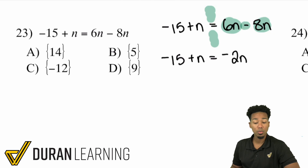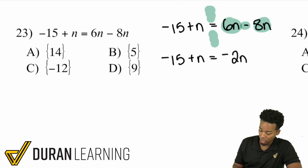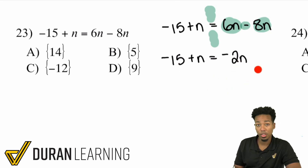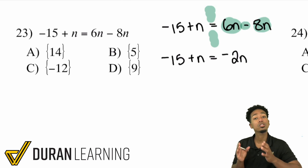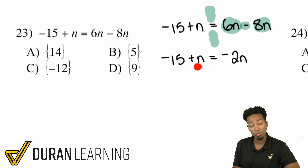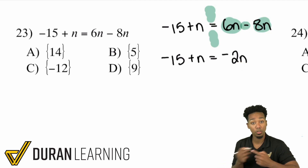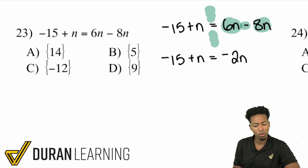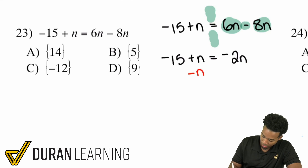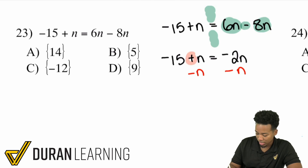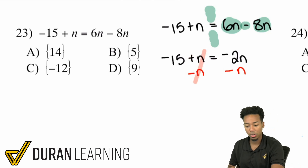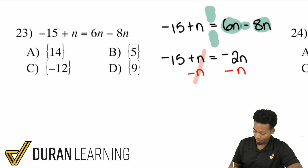From here we have options. As long as you do the same thing to both sides, you're going to get the correct answer. I could try to move the 2n over here, move the 15 over there, and then solve. Or I could just move this n over here and give myself fewer steps. The way I'll do that is by subtracting n on both sides. The reason is the opposite operation — instead of adding, we're subtracting — and that's going to allow us to cancel it out, nice and easy.